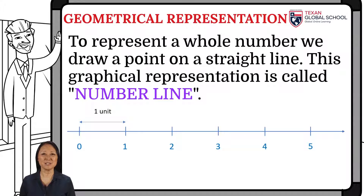Subsequently, we choose a point on the line that we want to represent. The starting point of the line is called the origin and is represented by the number 0. At the end, the number line is represented by an arrow, which indicates that it continues to infinity.